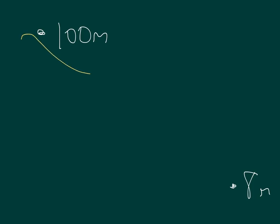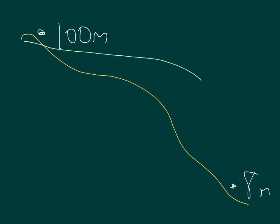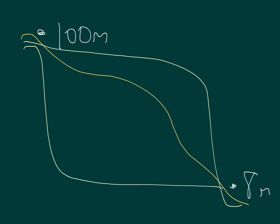It might be a gentle, gradual slope, or it could be a very different shape. So, spot heights are actually not as helpful as contour lines.